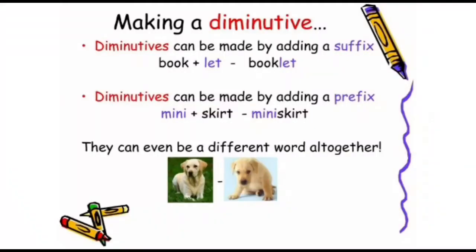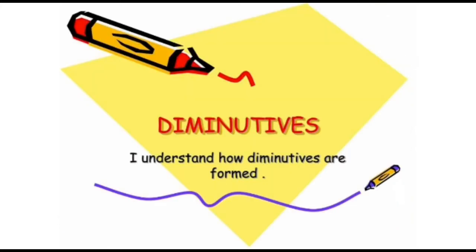Diminutives can be made by adding a suffix. For example, book plus -let equals booklet. A second example: mini plus skirt equals miniskirt. They can even be a different word altogether.